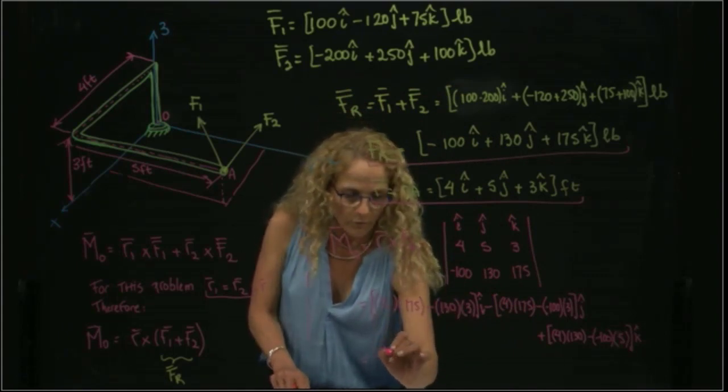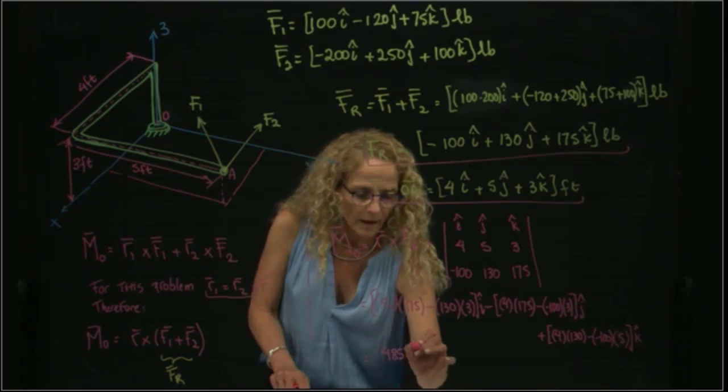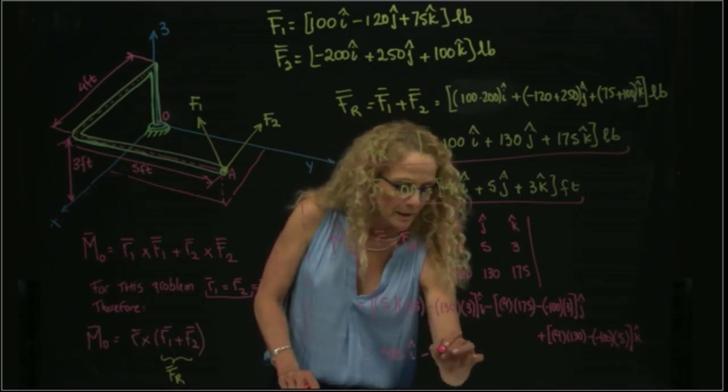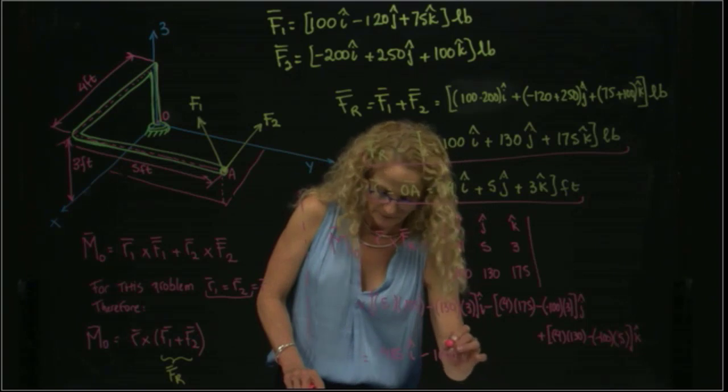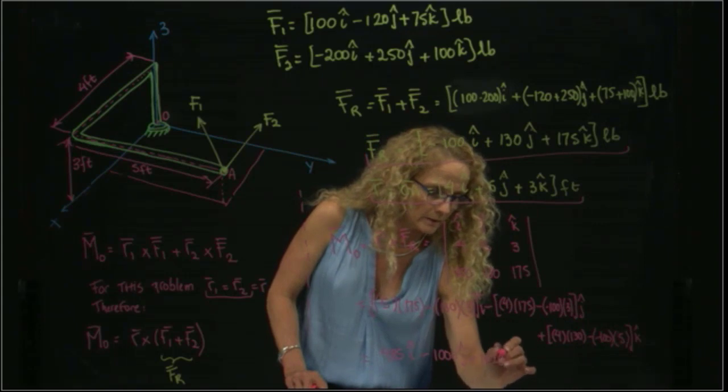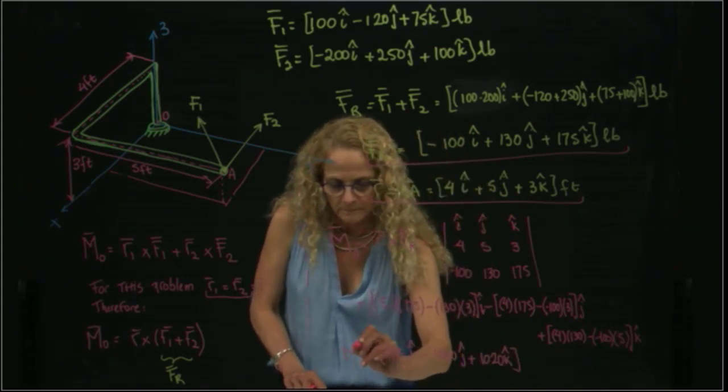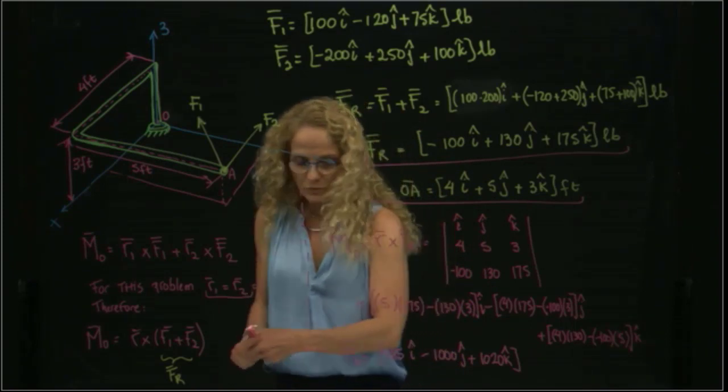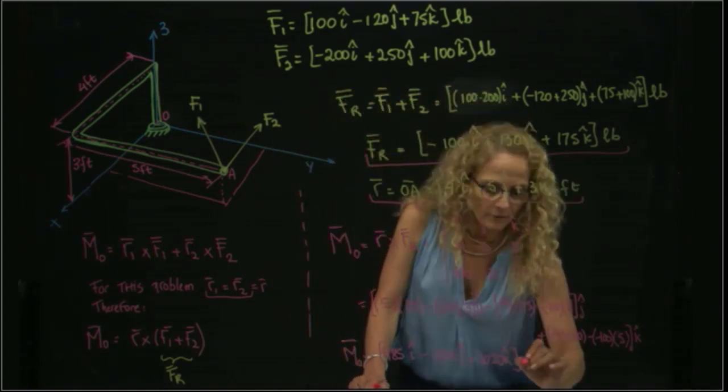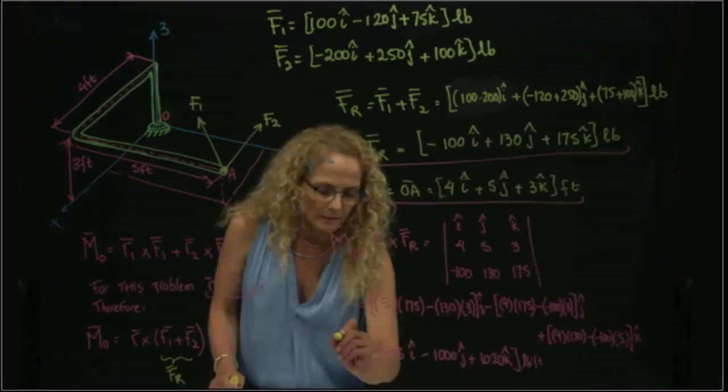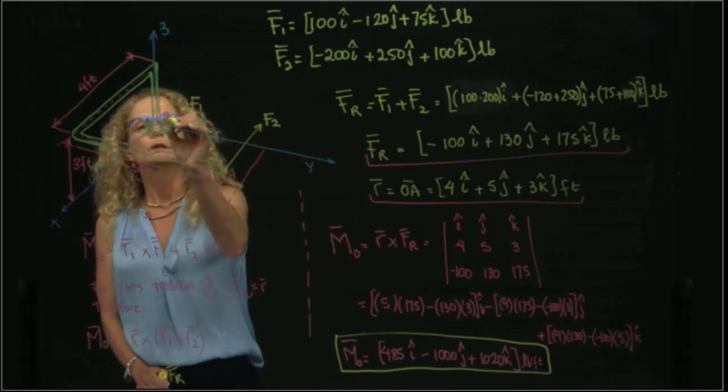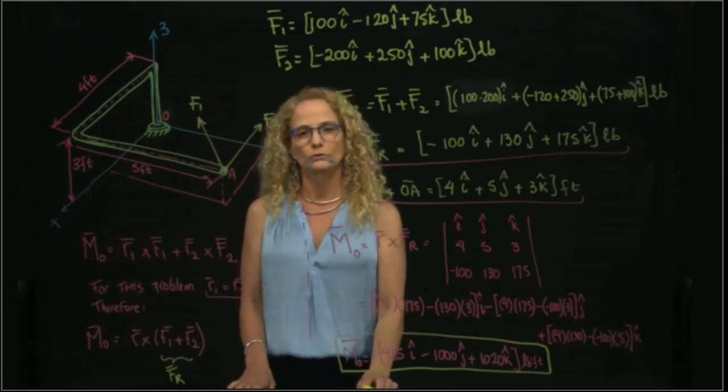This value is equal to 485 in I. This value is negative 1000 in J, and this value gives me a positive value, 120 in K. And of course, I never forget the units. Since I'm multiplying distance times force, I have pound-feet. This is the moment of these two forces with respect to point O. And this is the solution of this problem.